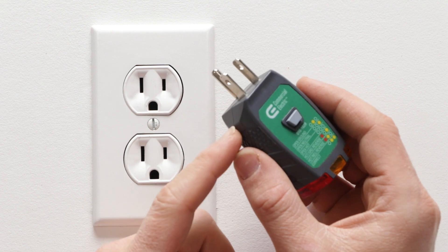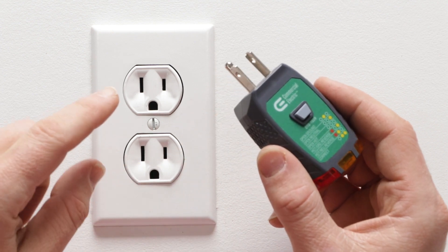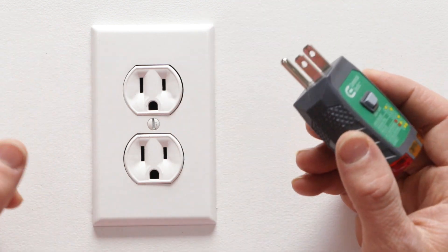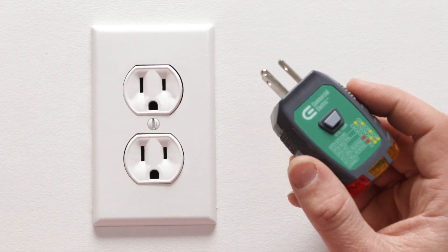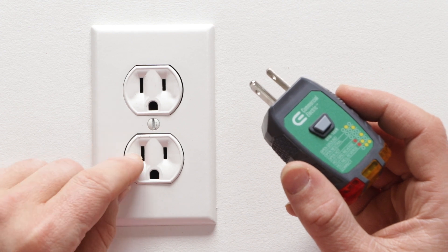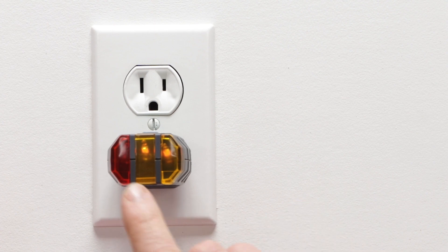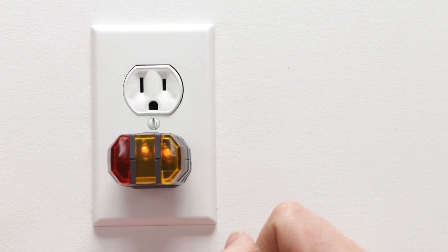What this is mainly for is testing an outlet after you have installed it. You've wired it all up, you've flipped the breaker on, and you want to check that this is working just right. All you have to do is plug it in and there's three little spots for lights.